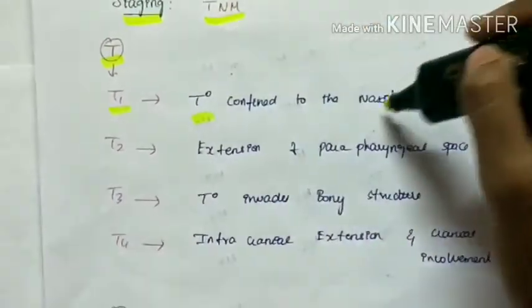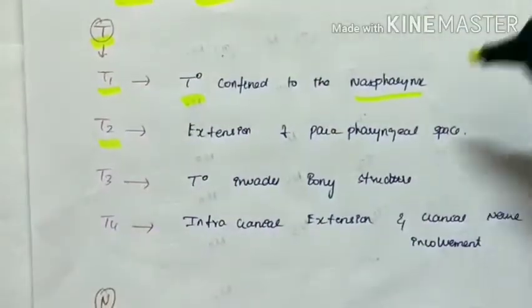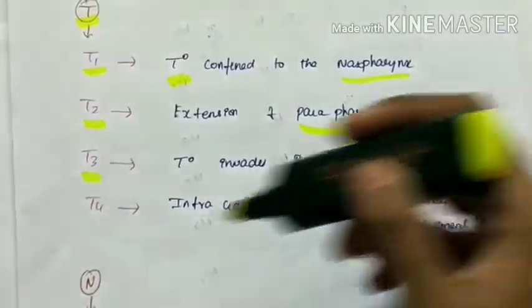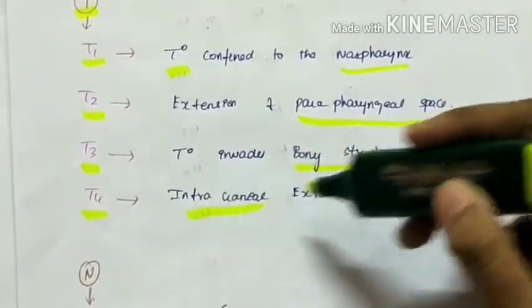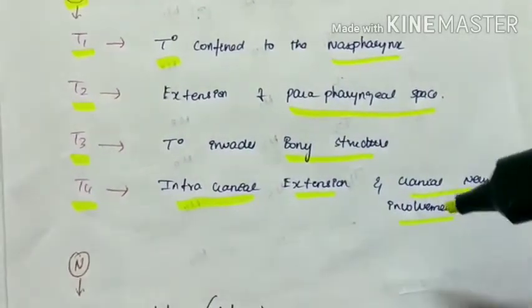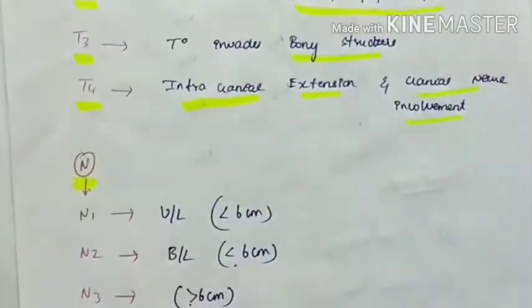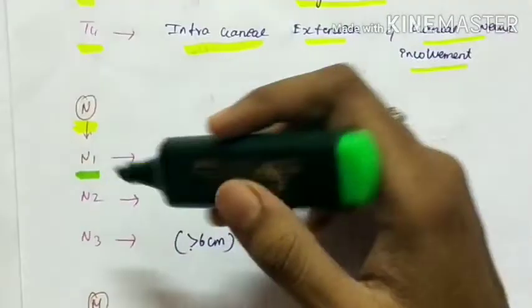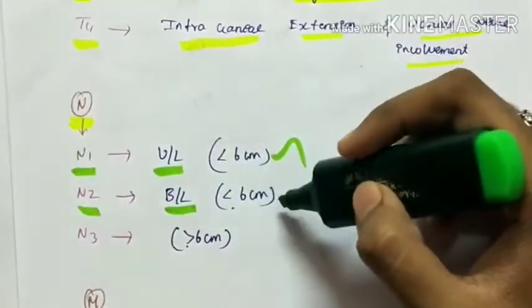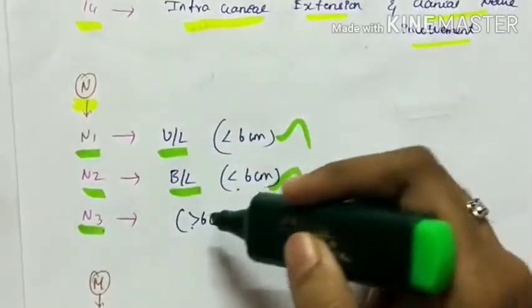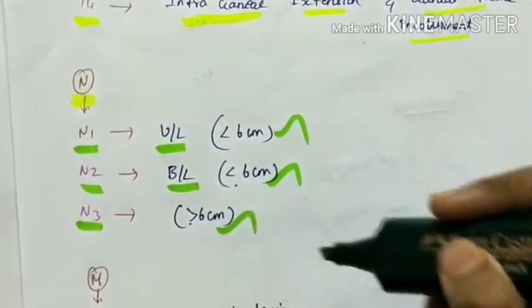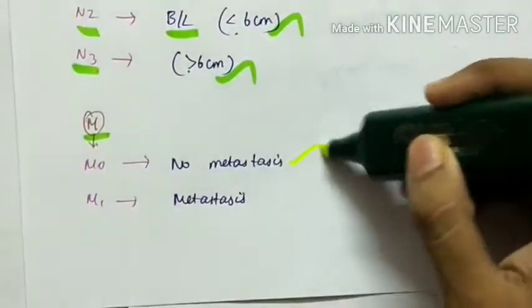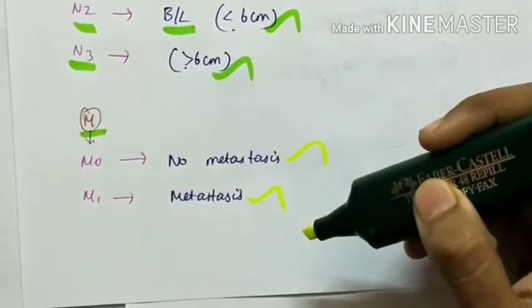Next comes TNM staging of nasopharyngeal carcinoma. T1 is when tumor is confined to nasopharynx. T2 is when tumor extends to parapharyngeal space. T3 - tumor invades bony structure. T4 - intracranial extension and cranial nerve involvement. For N (lymph node): N1 is unilateral and less than 6 cm. N2 is bilateral lymph node involvement less than 6 cm. N3 is lymph node enlargement more than 6 cm.